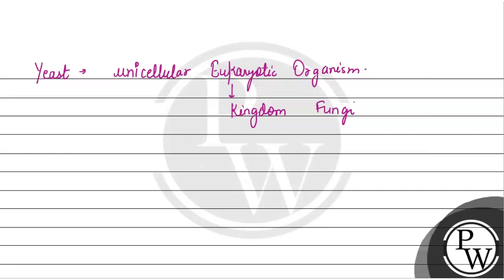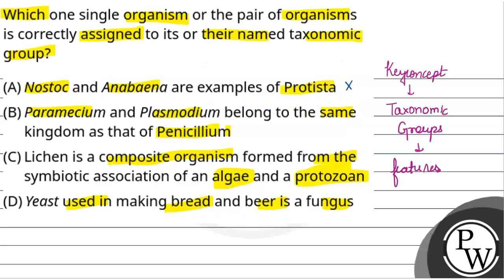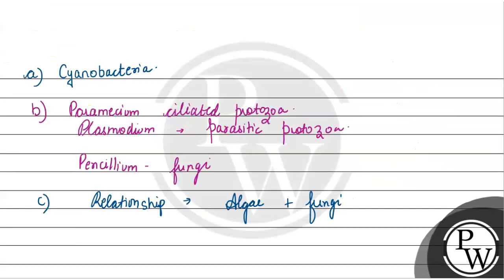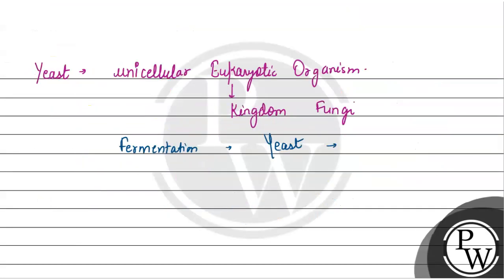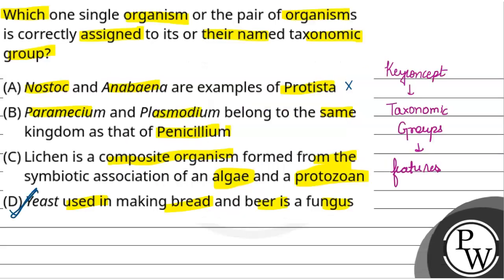by fermentation, yeast converts carbohydrates into carbon dioxide. With the help of fermentation, it is used to make beer, bread, cakes, and puddings. So the correct option here is Option D. Hope it is clear.